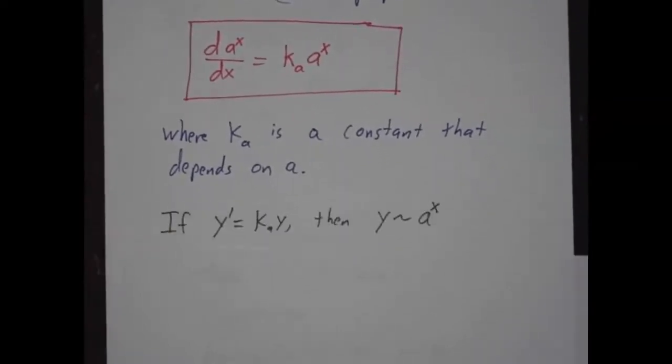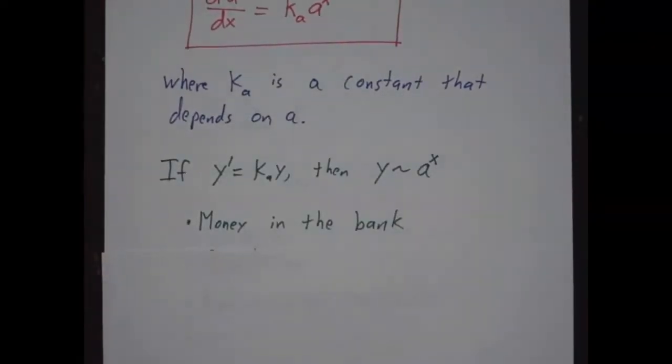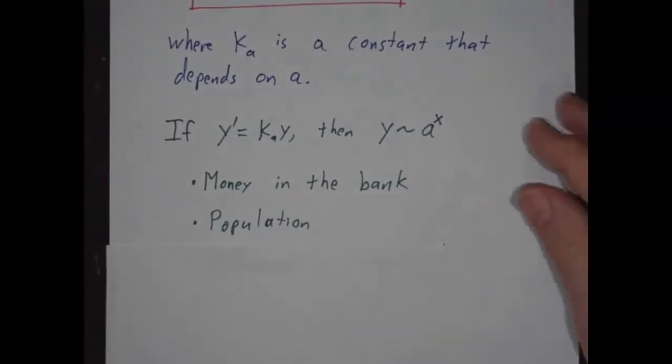And what that means is that if you ever have a situation where something is growing at a rate that's ka times y, then you expect it to behave like an exponential. And this exponential growth is seen in money in the bank, where the bank gives you money in proportion to how much you've deposited. Population, where births and deaths are proportional to how many people are already here.